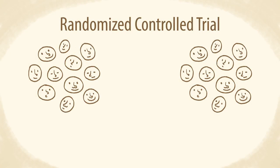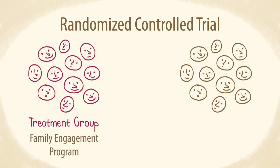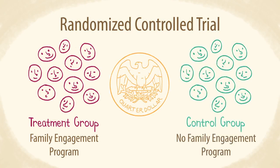So how would researchers figure out if the program caused the change? Ideally we run randomized controlled trials, also called RCTs or field experiments, just like the method medical researchers use to carefully test new medications. In an RCT, some parents are randomly assigned to a treatment group that receives the new family engagement program, while the rest are assigned to a control group which does not get the program.